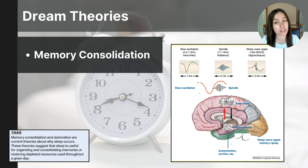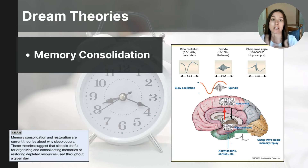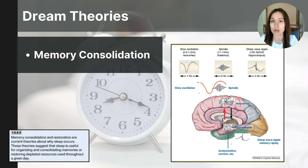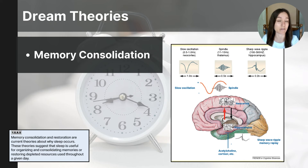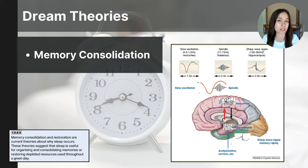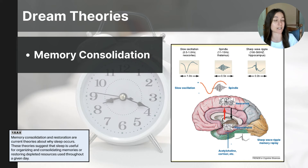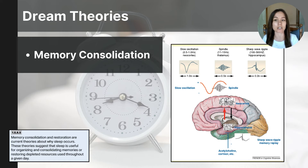The memory consolidation and restoration theory takes a different angle, focusing on how sleep — especially REM sleep — helps us process and store memories, noting that this is also when most of our dreaming occurs. According to this theory, when you sleep, your brain replays and reorganizes the experiences and information gathered during the day, moving them into long-term memory and strengthening neural connections to integrate new information with what you already know. Dreams are thought to be a side effect of this process, reflecting the brain's work in storing and filing away daily experiences. To summarize, the memory consolidation theory highlights how dreams are linked to our memory and learning process.